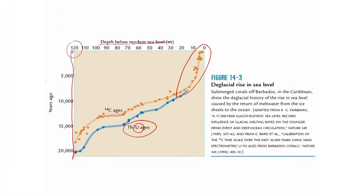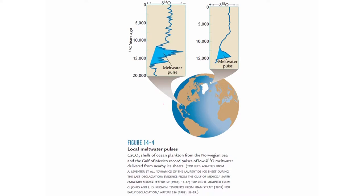That also results in sea level change, which we saw in terms of the C14 and thorium-uranium ages, and there are now many more feedbacks that will be of interest for global warming timescales. The local meltwater pulses were recorded in the Gulf of Mexico and just north of the Arctic Circle, to the east of Greenland.